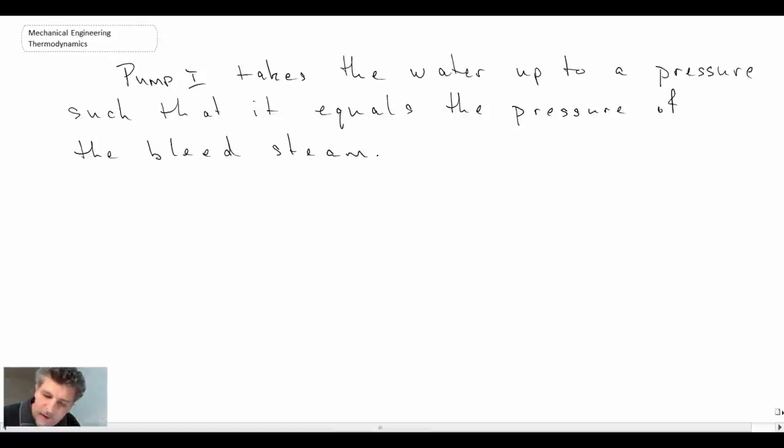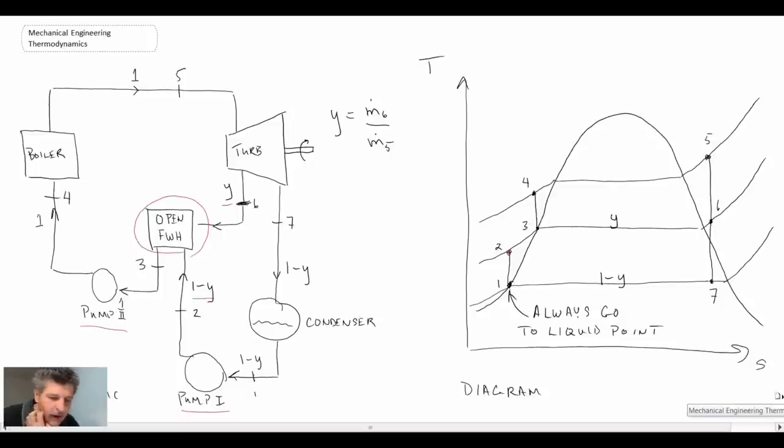So pump one is taking the liquid up to the pressure of the bleed steam. These two liquid streams are coming together and mixing in the open feed water heater. They need to be at the same pressure. So that's one point that you'll want to remember.